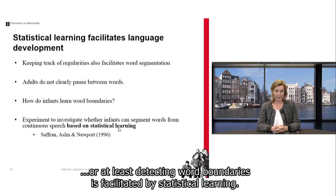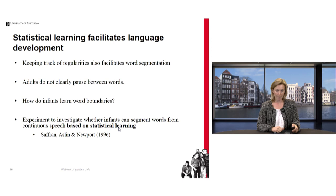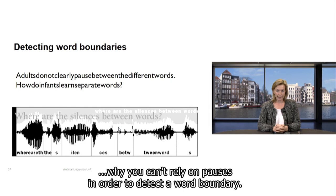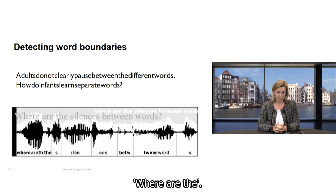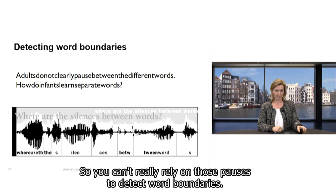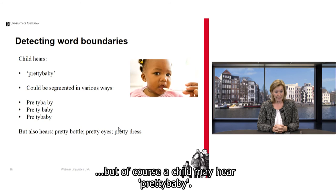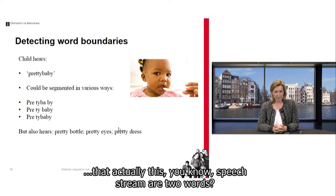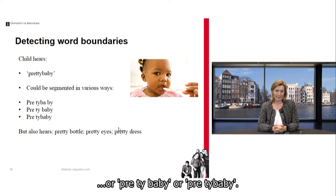I'll show you a famous experiment done by the researchers Saffran, Aslin and Newport. First, here is a graph illustrating why you can't rely on pauses to detect a word boundary — there are no pauses, yet there are three words. So, let's assume a child doesn't know the words 'pretty' and 'baby', but may hear 'pretty baby'. The question is how a child knows that this speech stream contains two words, since 'pretty baby' could be segmented in many different ways. But the child also hears many other phrases: 'pretty bottle', 'pretty eyes', 'what a pretty dress.'